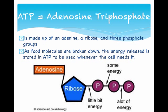Adenosine triphosphate is made up of five different parts: adenine, ribose, and then three phosphate groups. We talked about phosphate groups before when talking about phospholipids — they're the same thing, just in a different molecule here.